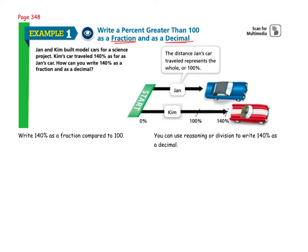we're going to learn how to take a percent that is greater than 100 and write it as both a fraction and as a decimal. Jan and Kim built model cars for a science project. Kim's car traveled 140% as far as Jan's car. How can you write 140% as a fraction and as a decimal? Well, if we start with the fraction part, remember, percent means out of 100.